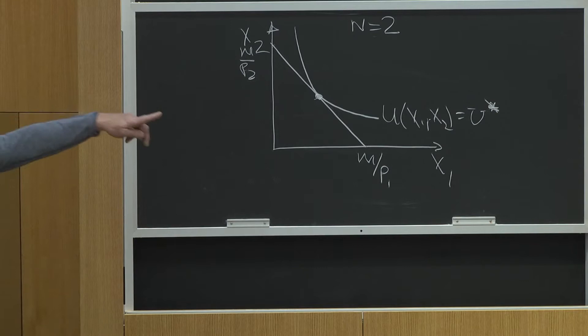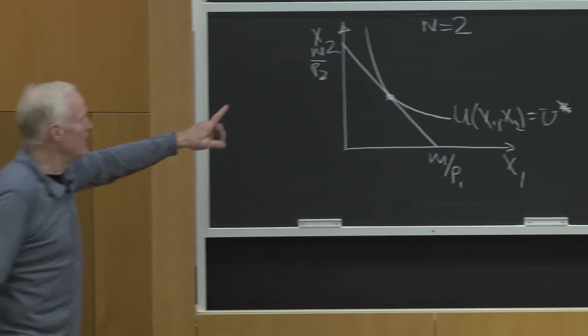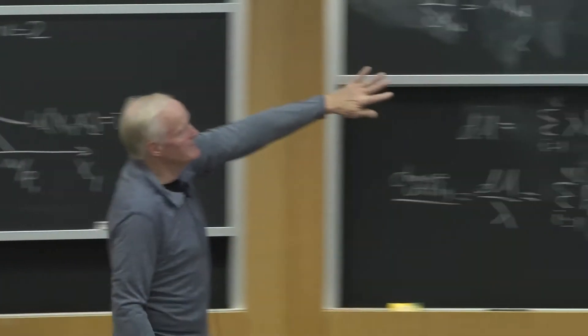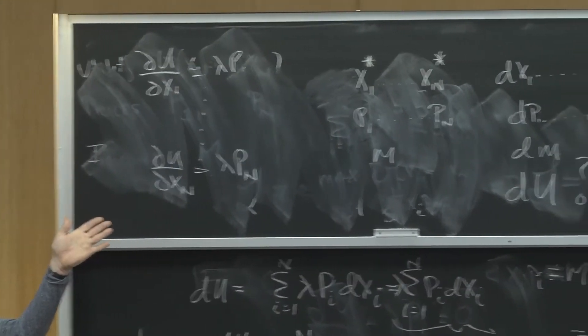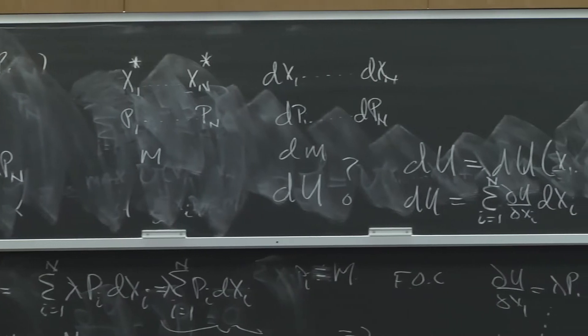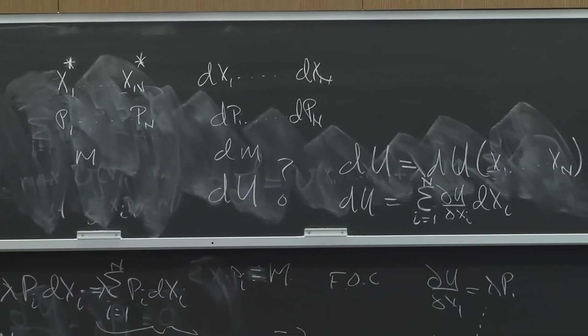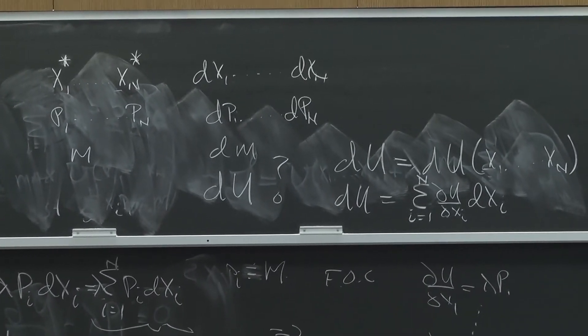If I look at that equation over there on the board, that left-hand side is the slope of the indifference curve in absolute value at each point. The right-hand side is the slope of the budget line. And my equilibrium says I've got to be tangent.